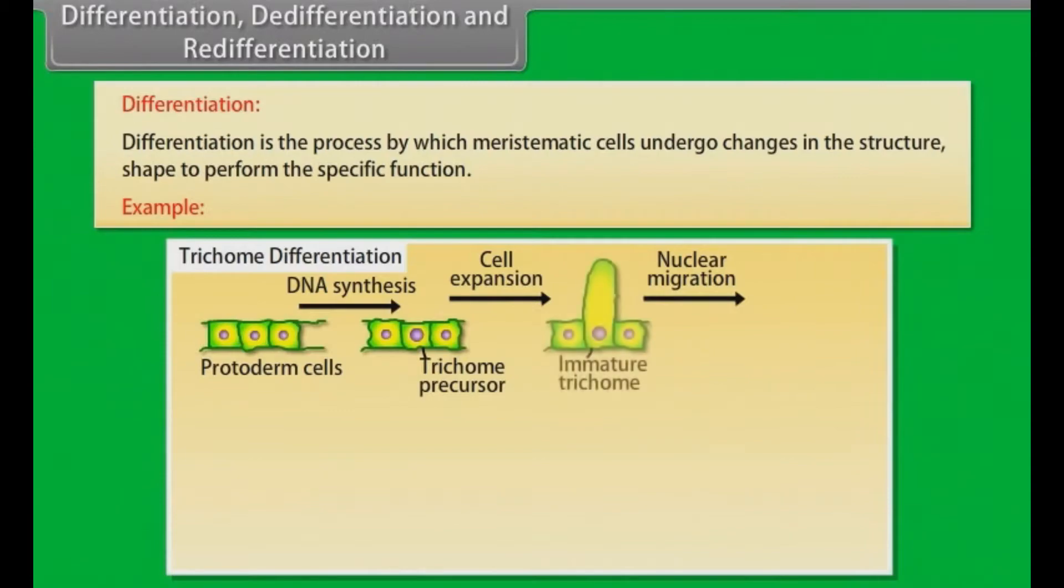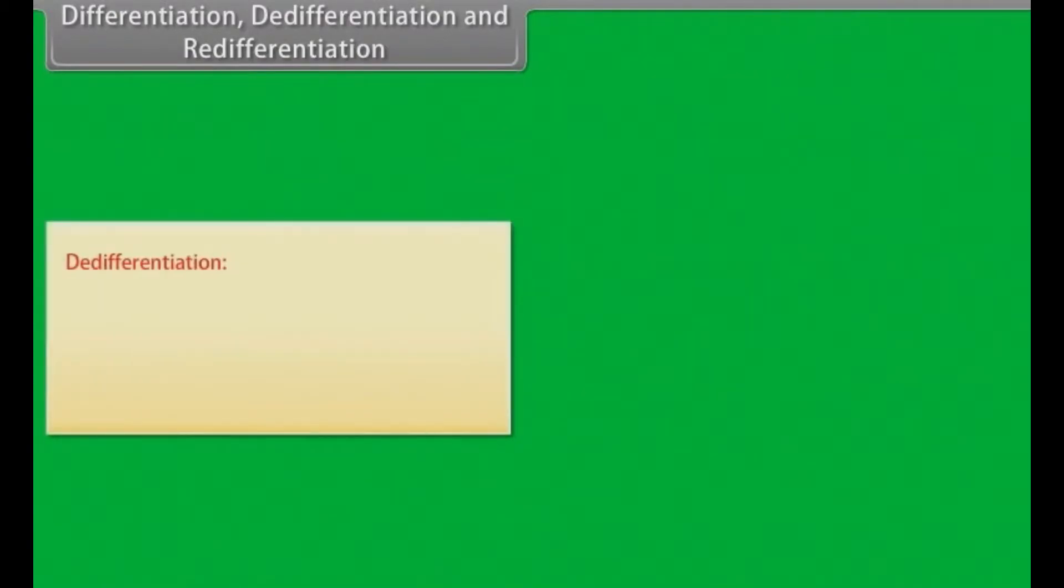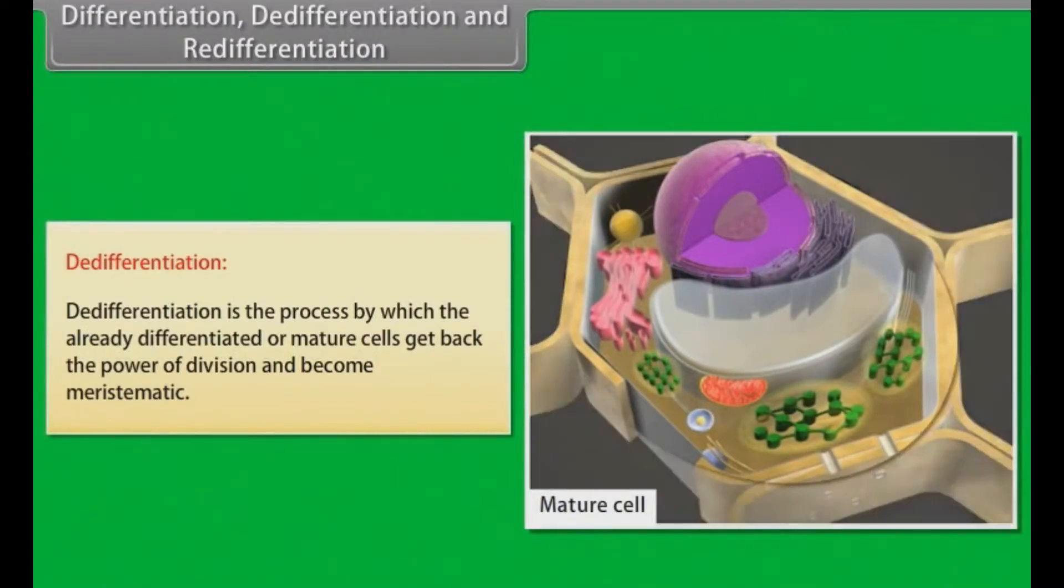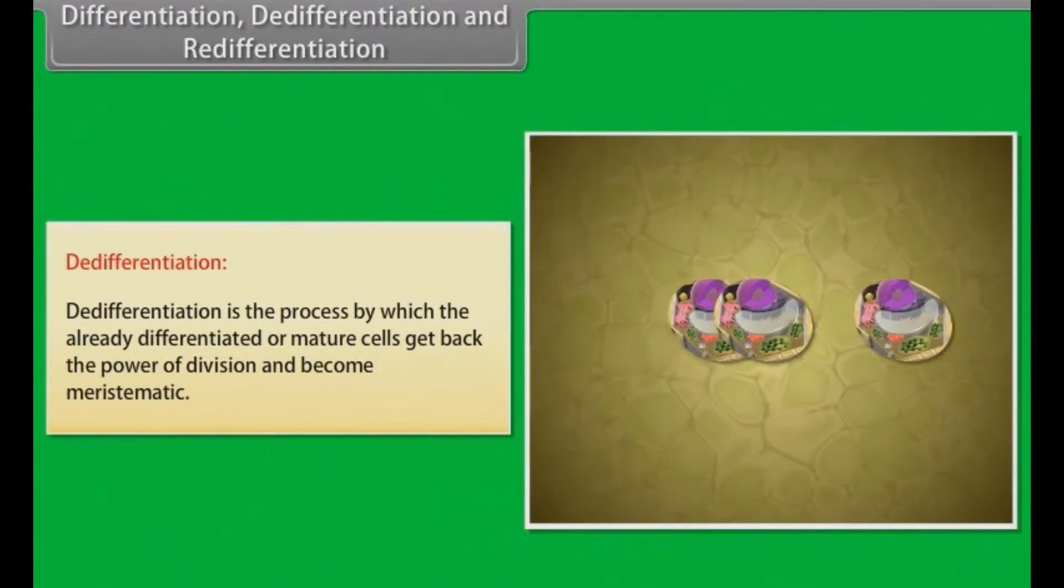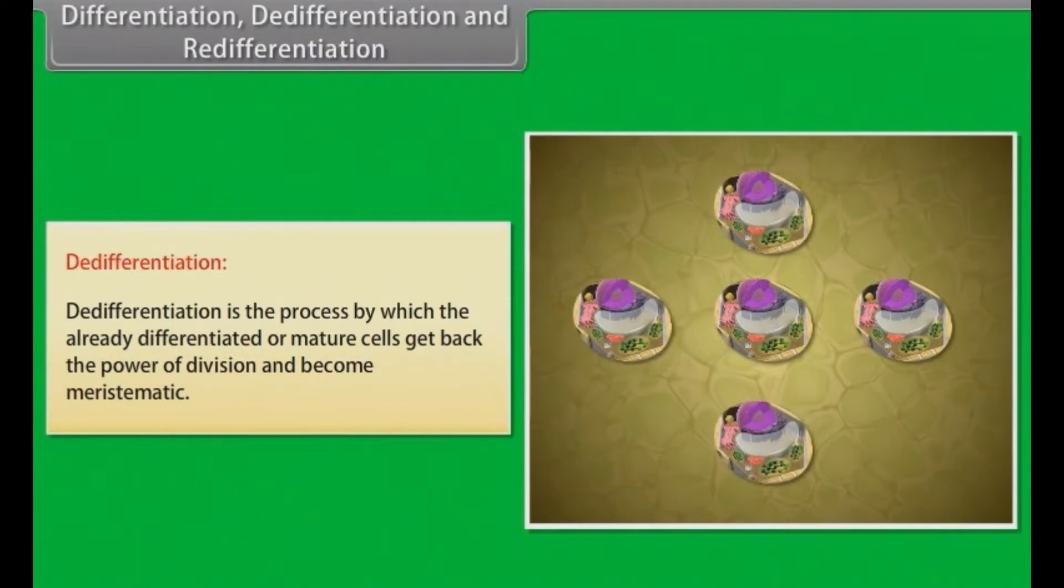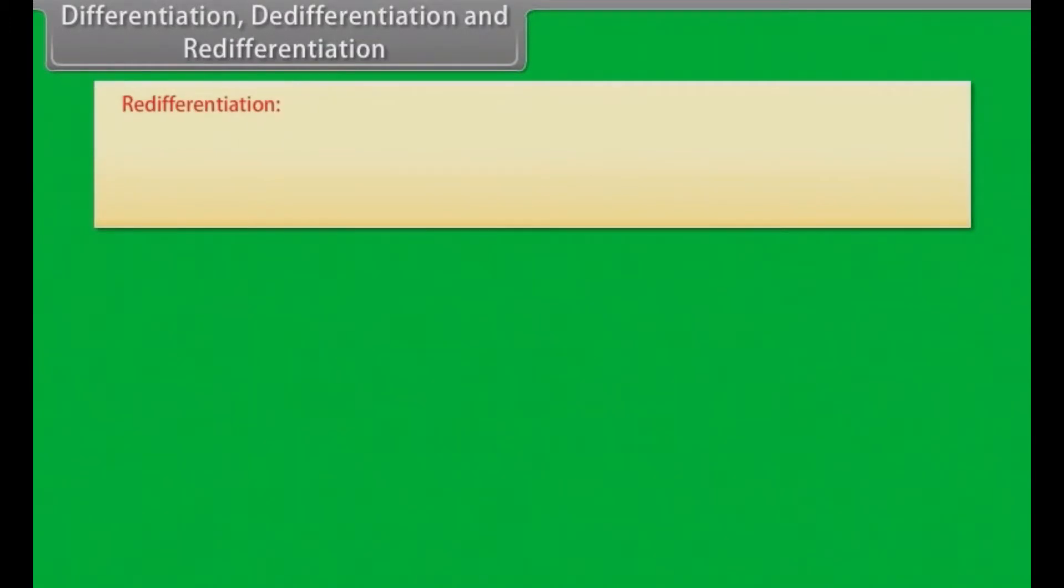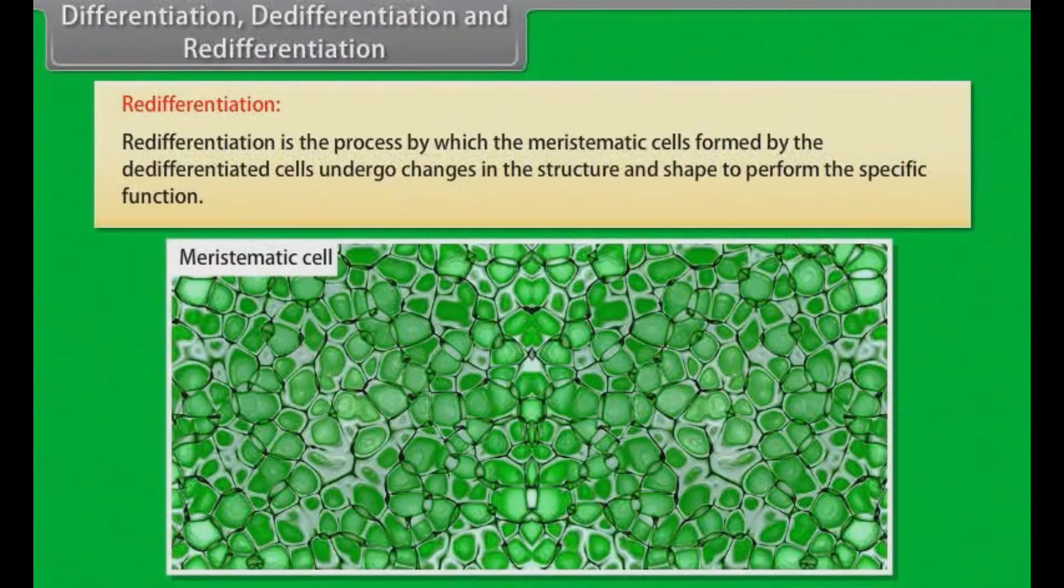After that, nuclear migration takes place and then branching occurs and then it reaches to maturation stage. De-differentiation: redifferentiation is the process by which the already differentiated or mature cells get back the power of division and become meristematic. Redifferentiation is the process by which the meristematic cells formed by de-differentiated cells undergo changes in the structure and shape to perform the specific function.